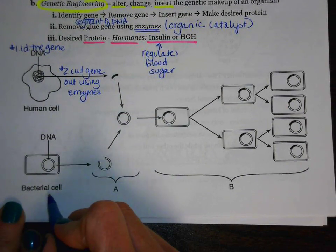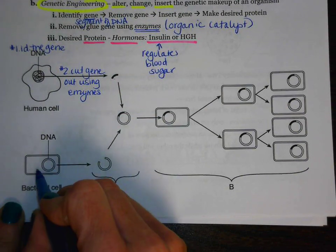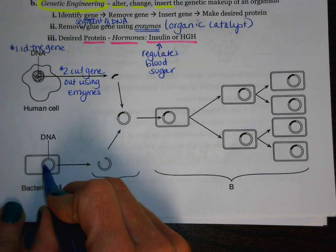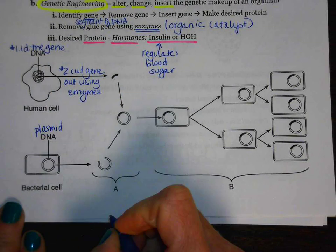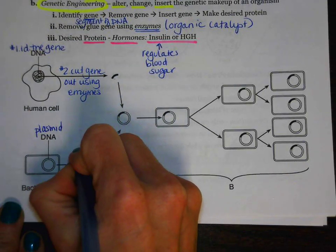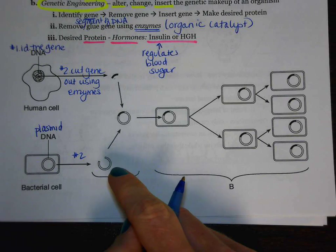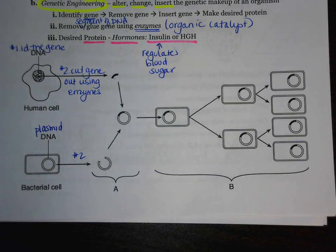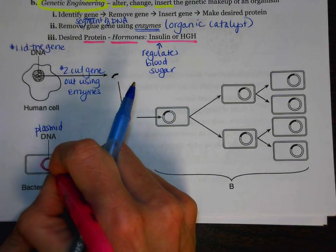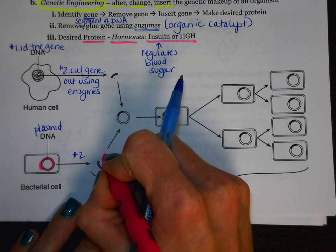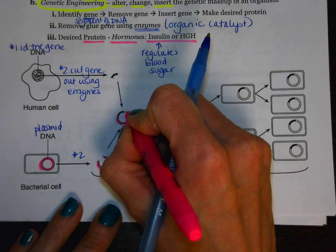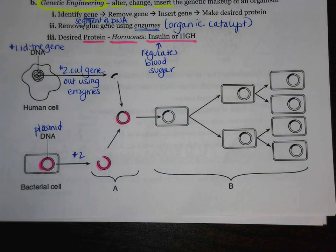Over here we have the bacterial cell. Notice the DNA in the bacterial cell is circular — we call that a plasmid. Just like on the top, we also have to go and cut the plasmid. This time, though, we're not cutting out any of the DNA; we're keeping all of the DNA for the bacteria present. We're going to stick the two together. So here we have the bacterial plasmid DNA, and we've used an enzyme to cut it. Our next step is to glue them back together again.